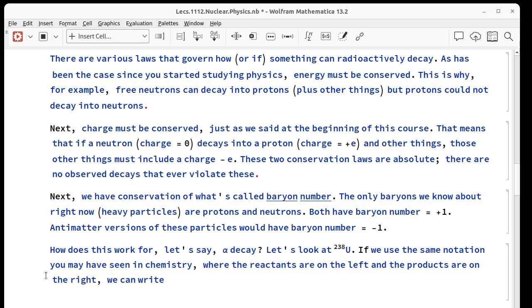This is what keeps protons from being able to decay into neutrons, because the proton is a little bit smaller. A free neutron can decay into a proton, but it can't go the other way because energy wouldn't be conserved. Charge also has to be conserved, so if that neutron does decay into a proton, it's going from zero charge to plus e charge. Something else has to be involved that gives us a charge of minus e, so that would be like an electron in this case. These two conservation laws have never been violated, so it would be a very big deal for physics if something violated them.